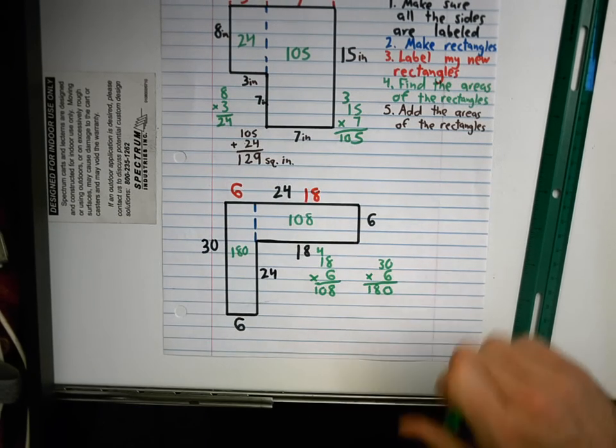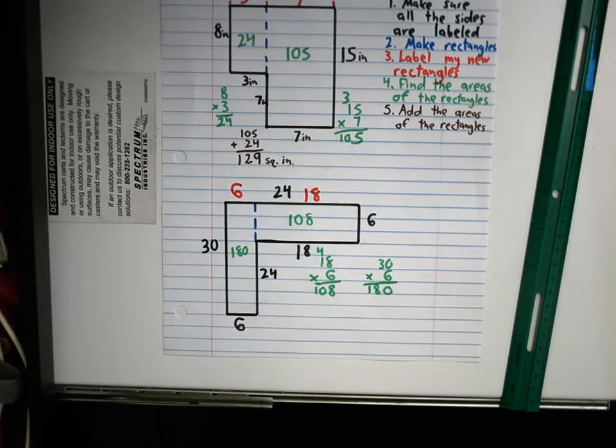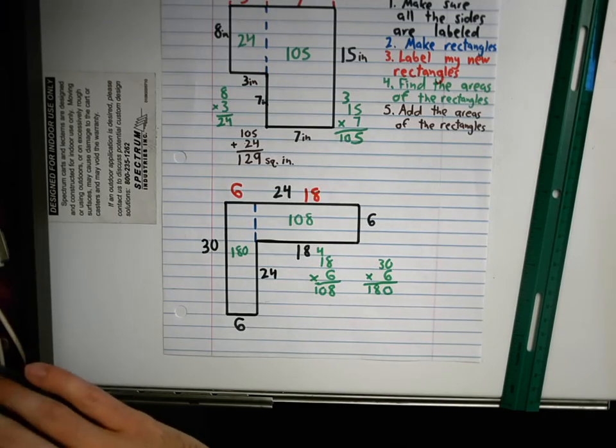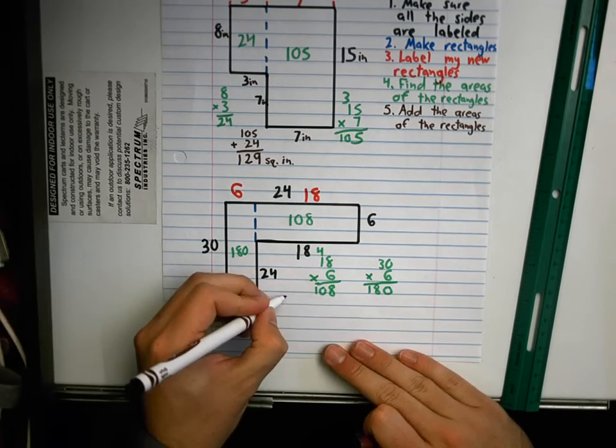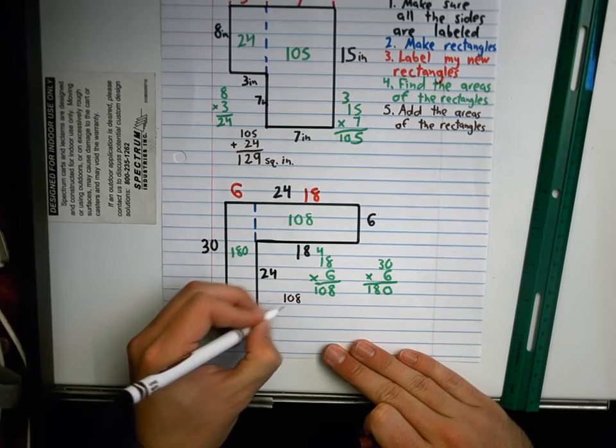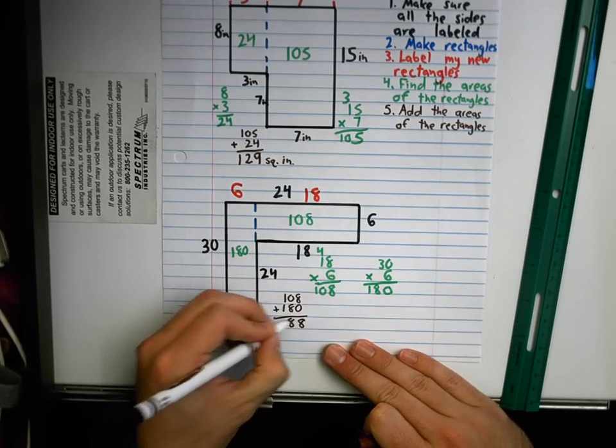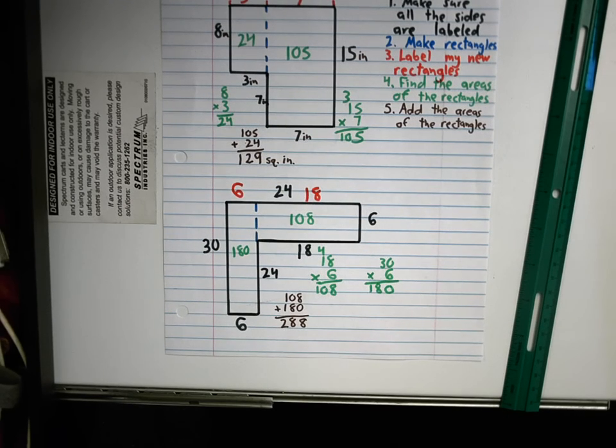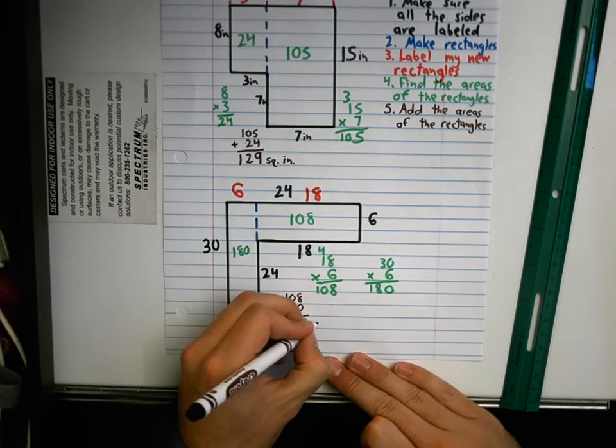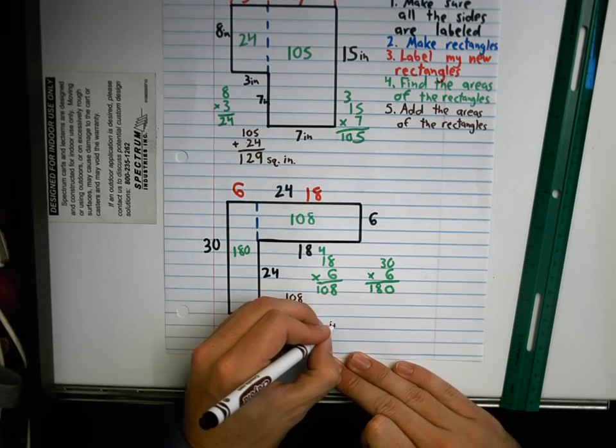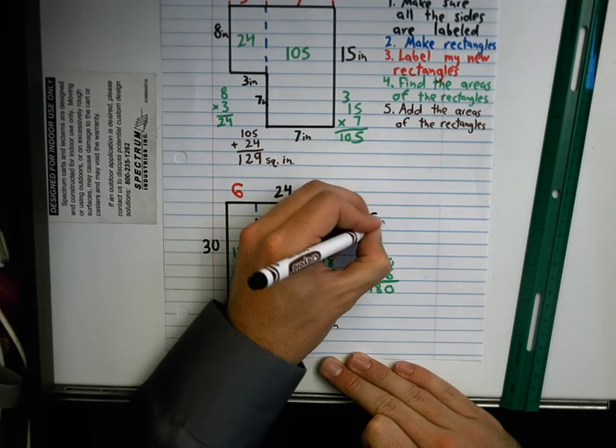And step 5 is add them together. 108 plus 180, 8, 8, 2. 288. And we'll say square inches. I'll put inches on each of these.